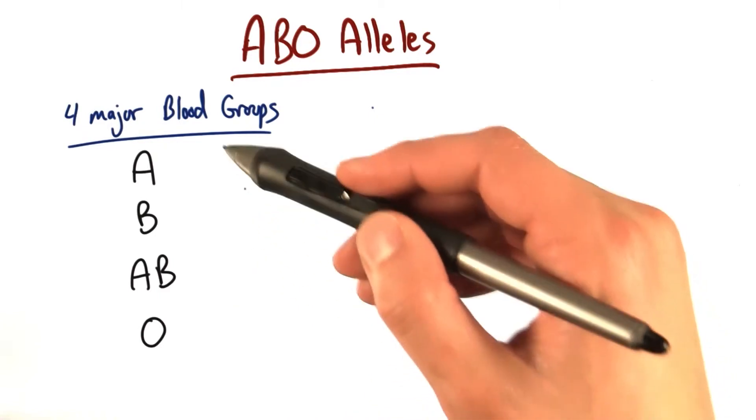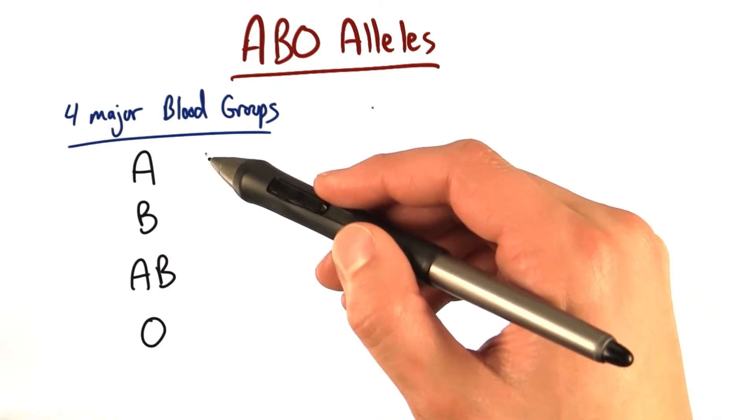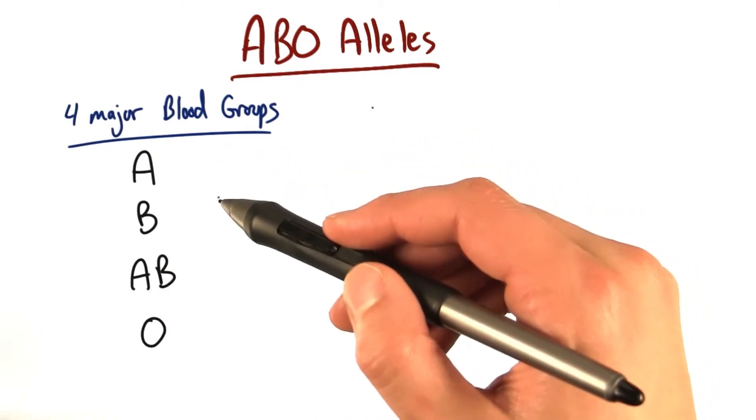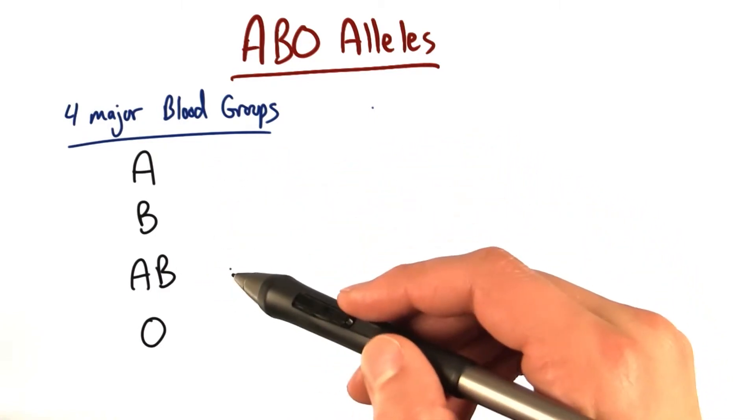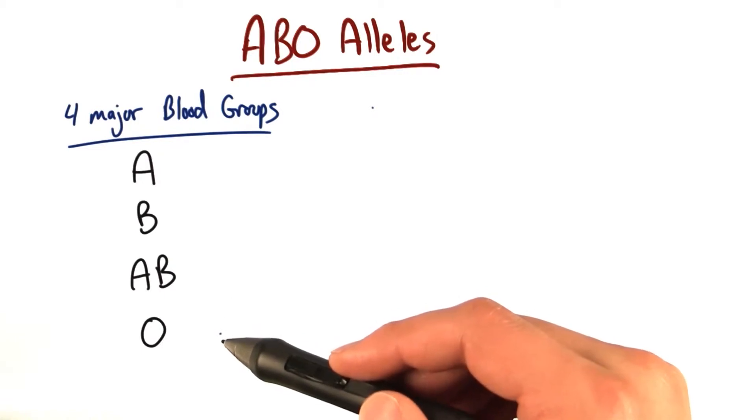When you go to the clinic, they'll tell you what's on your blood cell — do you have A type, B type, A and B on your cell, or no type at all, O type.